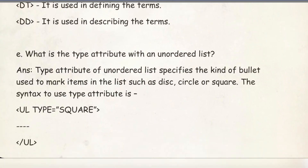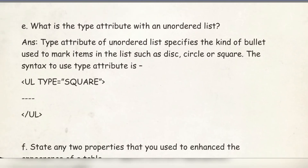Number E: What is the type attribute with an unordered list? The type attribute of an unordered list specifies the kind of bullet used to mark items in the list, such as disc, circle, or square. The syntax to use the type attribute is: ul type="value" — where value can be square, disc, or circle.